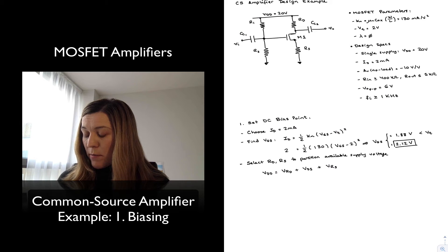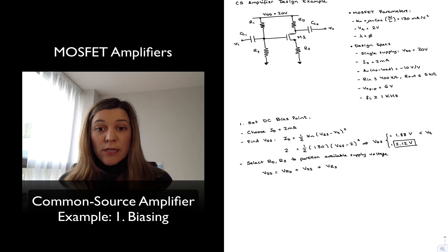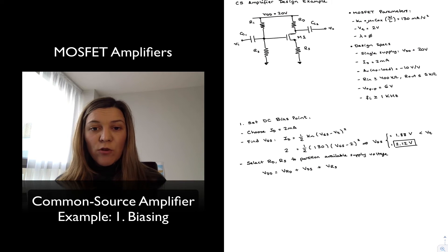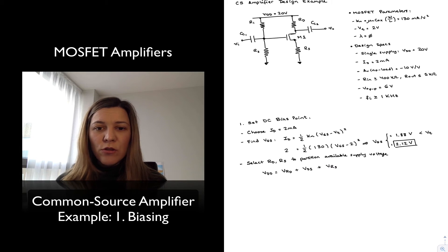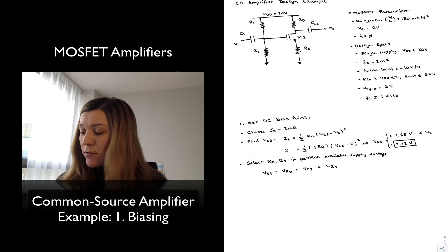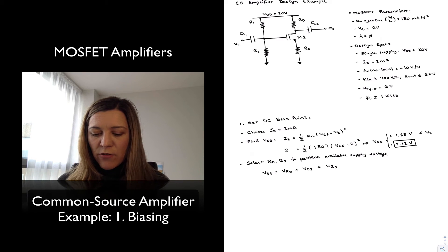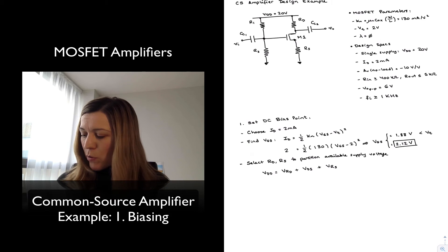I will want my VDS to be greater than VGS minus Vt. I can see since my VGS is 2.12 volts and my Vt is 2 volts, that just means that VDS needs to be greater than 0.12 volts, so it's not a very constrained requirement.